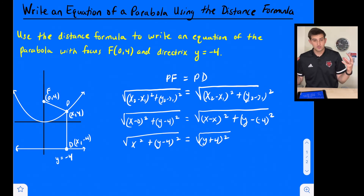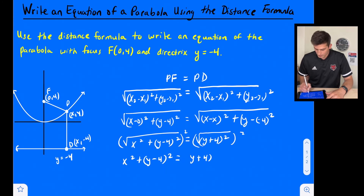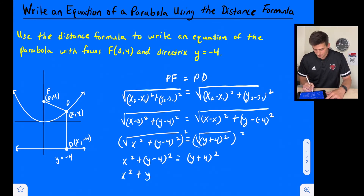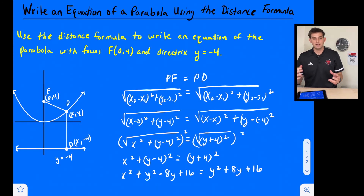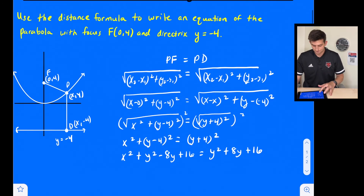We can square both sides to get rid of the radicals. So now we have x squared plus (y minus 4) squared equals (y plus 4) squared. Expanding the binomials: x squared plus y squared minus 8y plus 16 equals y squared plus 8y plus 16. That's the square of a binomial applied to both sides.